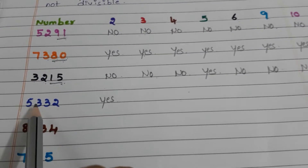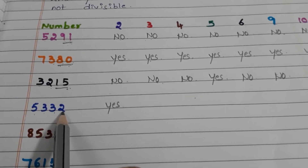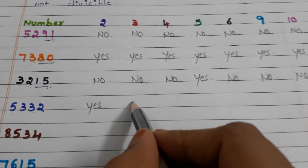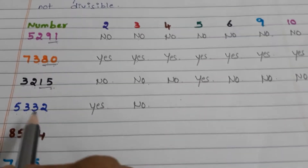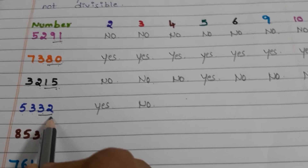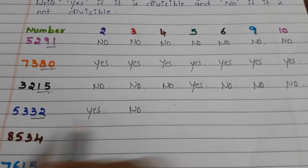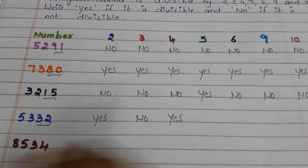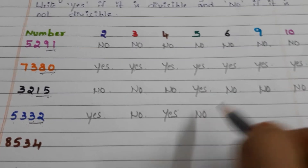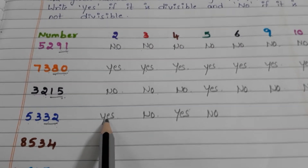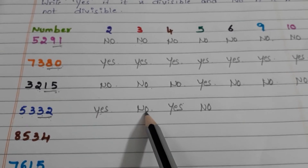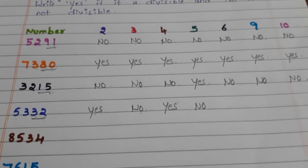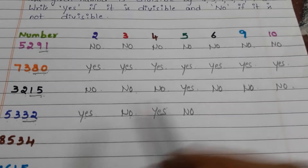For the next number, in the units place 2 is there, so it is divisible by 2 — write yes. What about 3? 5 plus 3 is 8, 8 plus 3 is 11, 11 plus 2 is 13. 13 is not a multiple of 3, so the entire number is not divisible by 3 — write no. What about 4? Observe last two digits: 32. 32 is divisible by 4, so this number is divisible by 4 — write yes. What about 5? In the units place 2 is there, so this number is not divisible by 5 — write no. What about 6? This number is divisible by 2 but not by 3, so it is not divisible by 6 — write no.